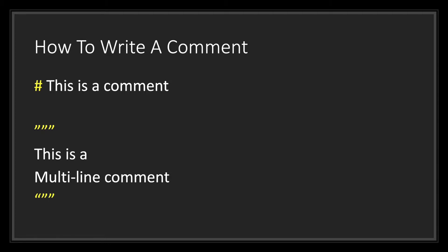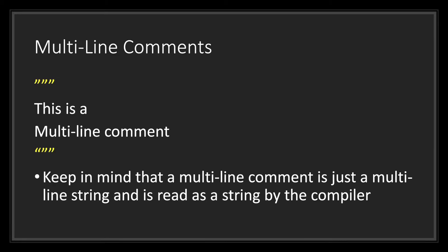Basically, anything before the pound sign symbol will be considered code for the compiler to read, and everything after the pound sign symbol will be skipped by the compiler. The second way to write a comment in GDScript is by using three double quotation marks followed by your comment, ending with three double quotation marks. Keep in mind that a multi-line comment in GDScript is actually a multi-line string, meaning the compiler will read it as a string rather than a true comment.